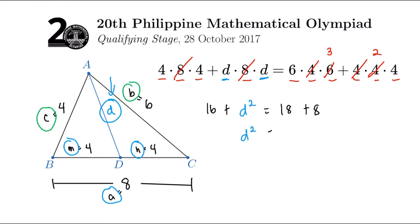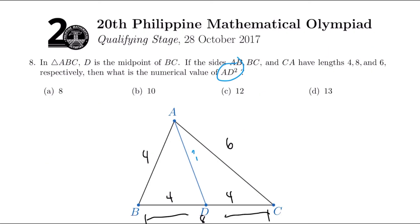So D squared would be equal to 18 plus 8 is 26, minus 16. So, apparently, our answer here would be 10. Going back to the question, we have 10 to be the answer.